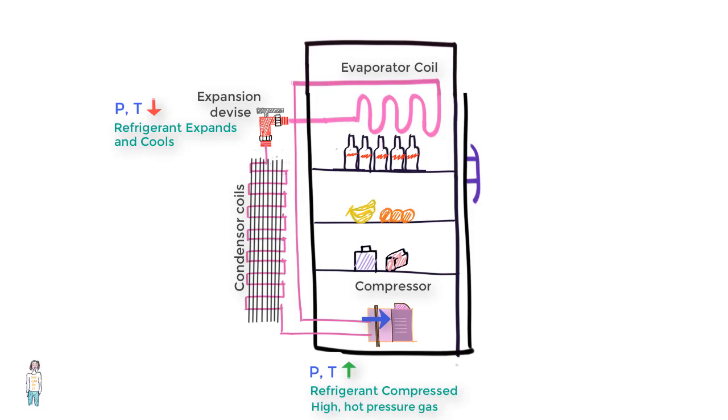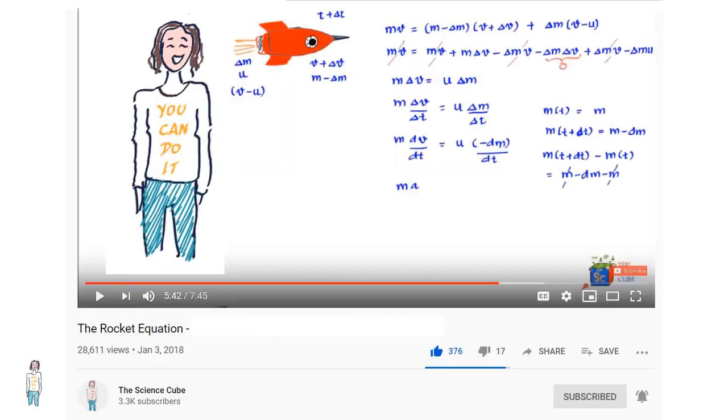This then flows into the condenser coils that are at the back of the fridge and radiates heat QH into the atmosphere. And as it does, it cools back partially into liquid and once again enters the expansion device to repeat the cycle.